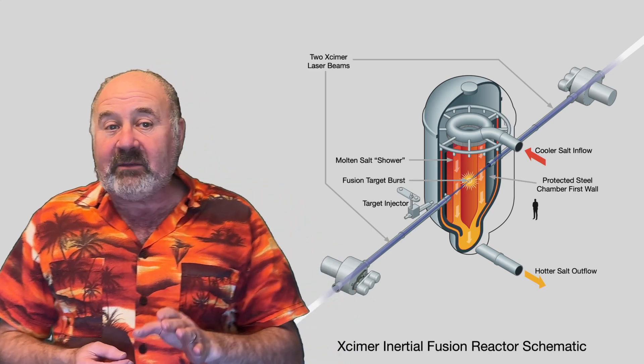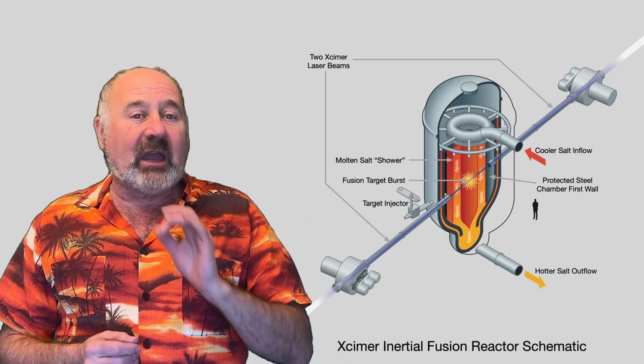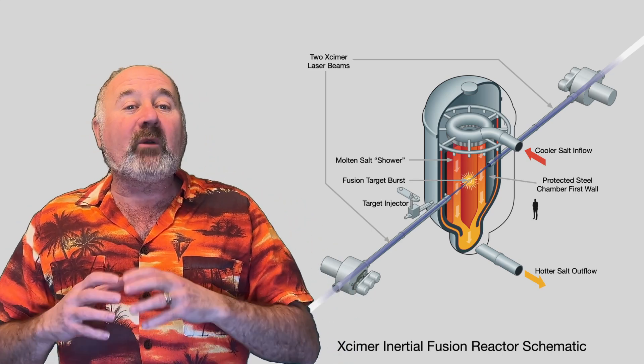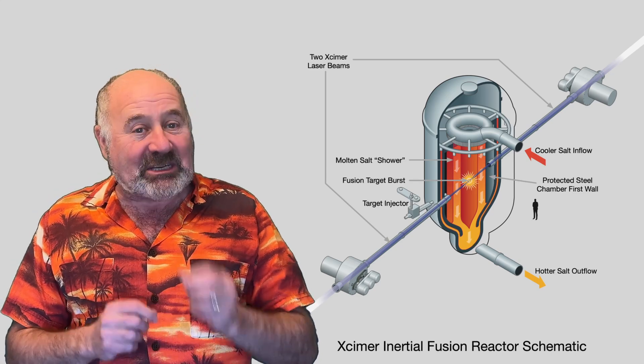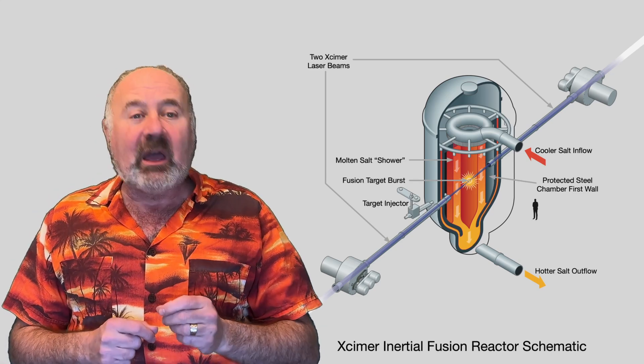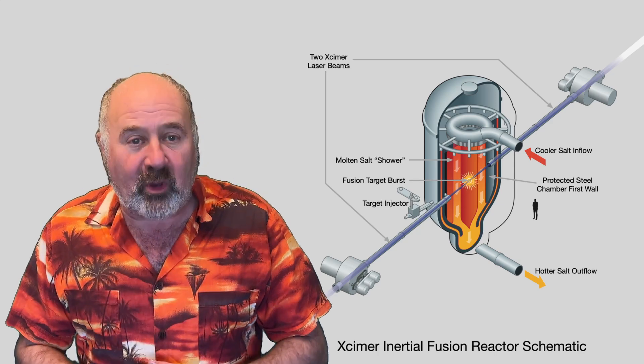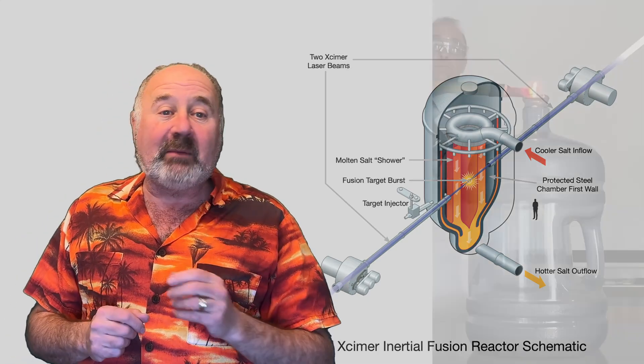Xcimer believes that their large target of heavy hydrogen fuel will couple more efficiently with the laser beam, and they'll be able to achieve ignition. And once that's achieved, the flash of fusion will spread across the target, like flame and gas, after a match has been dropped in it.